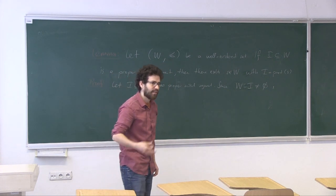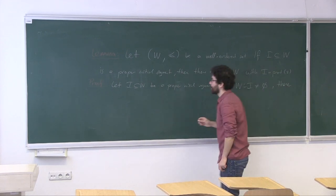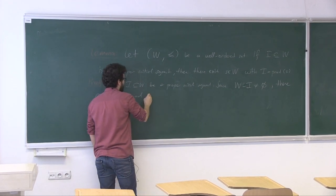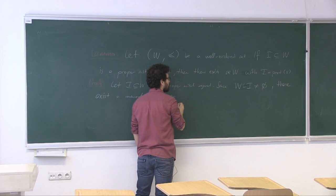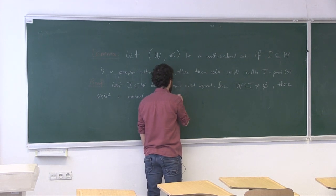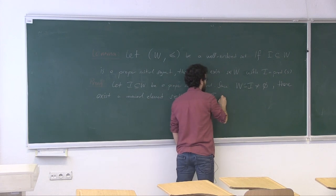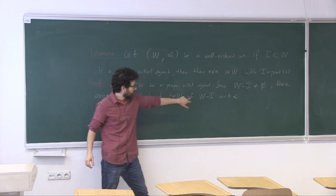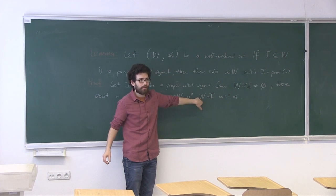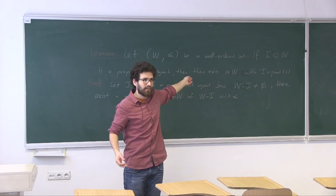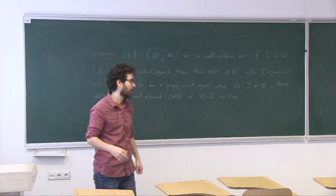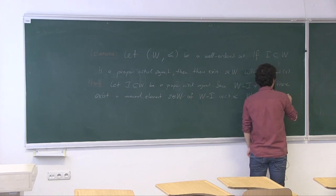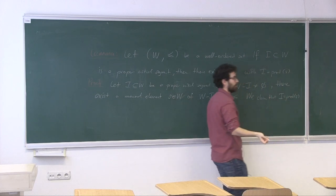They have minimal elements — that's by definition. So there exists a minimal element s of W \ I with respect to this relation. Since we're working with well-ordered sets, which are in particular linearly ordered sets, least element and minimal element are the same thing. We claim that I is exactly the set of predecessors of this element s.